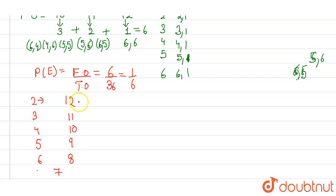For 2 and 12, there is only one case each. For 3 and 11, there will be two cases. For 4 and 10, there will be three cases. For 5 and 9, there will be four cases. For 6 and 8, there will be five cases. And for 7, there will be six cases.